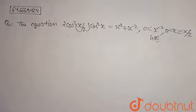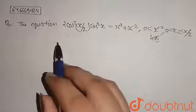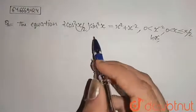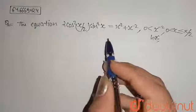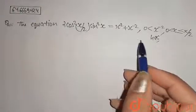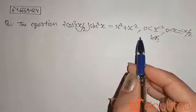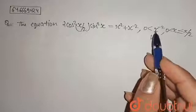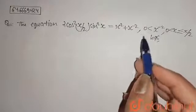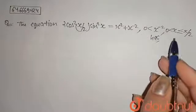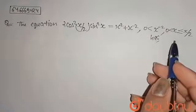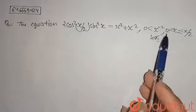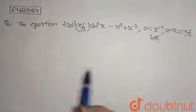It is given that the equation is 2cos²(x/2)·sin²x = x² + x⁻², where x⁻² is greater than 0 and x is greater than 0 and less than or equal to π/2. It means x is basically between 0 and π/2.